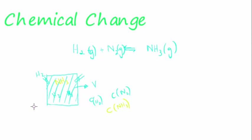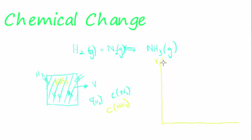If it was an exothermic reaction and it produced heat, the heat is also not allowed to escape from the system. What now happens is that initially, there's only a little bit — so if I plot this, instead of plotting volume, I'm going to plot concentration.